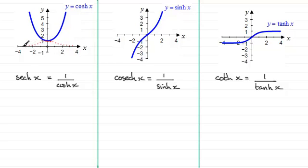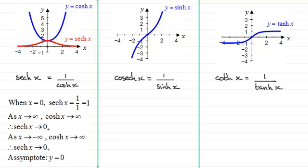So we get a curve looking something like this for y equals sech x, with an asymptote at the x axis, i.e. y equals zero. In summary: when x equals zero, sech x equals one. As x tends to infinity, cosh x tends to infinity, so sech x tends to zero from the positive side, staying above the x axis. The same argument applies as x tends to minus infinity — cosh x tends to infinity, so sech x tends to zero, remaining positive. The asymptote is y equals zero.